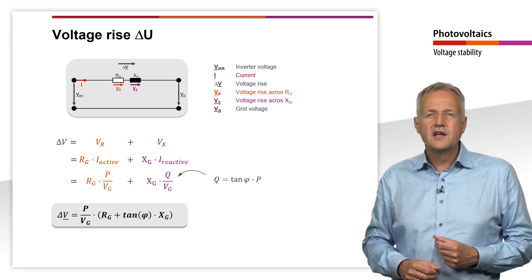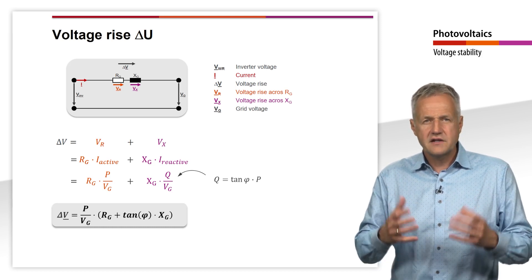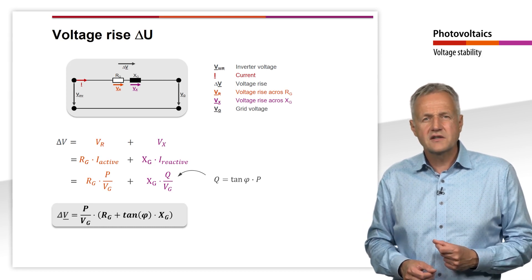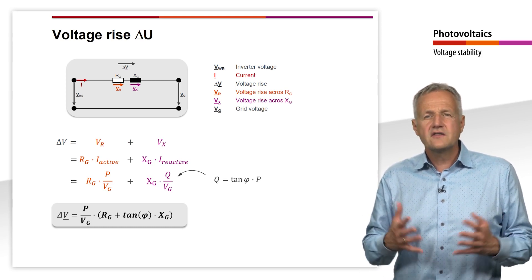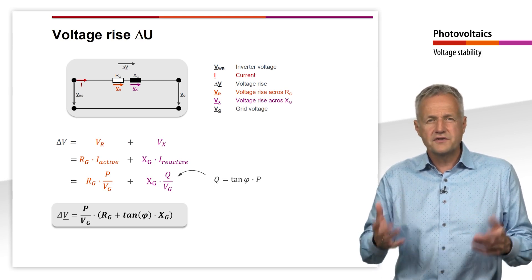Not surprisingly, the voltage rise depends significantly on the active power P fed into the grid. We also see that in addition to the magnitude of R and X, the phase shift set on the inverter also has an effect on the voltage rise.